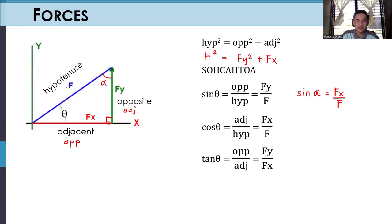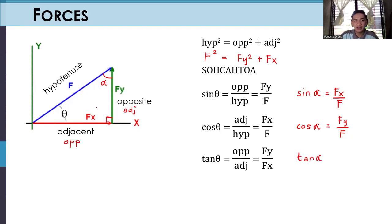For cosine of alpha: cosine is adjacent over hypotenuse. With respect to alpha, the adjacent side is FY, so cosine alpha = FY/F. For tangent alpha: opposite over adjacent, so tangent alpha = FX/FY.